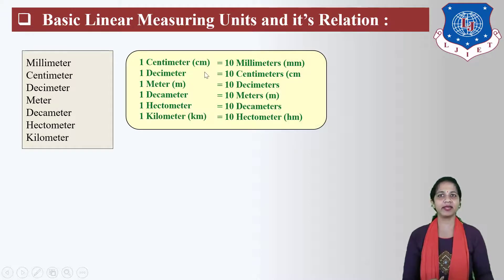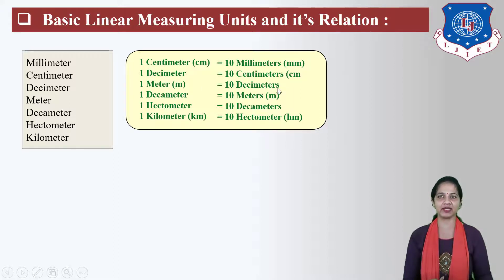1 centimeter is equal to 10 millimeters. 1 meter is equal to 10 decimeters. 1 decameter is equal to 10 meters. 1 hectometer is equal to 10 decameters. And 1 kilometer is equal to 10 hectometers.